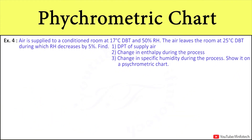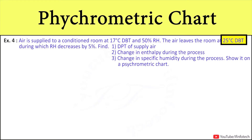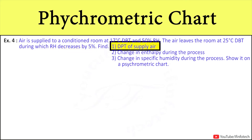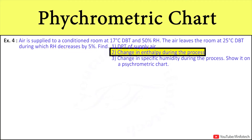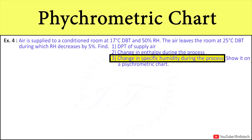Air is supplied to a conditioned room at 17°C dry-bulb temperature and 50% relative humidity. The air leaves the room at 25°C dry-bulb temperature, during which relative humidity decreases by 5%. Find the dew point temperature of supply air, change in enthalpy during the process, change in specific humidity during the process, and show it on the psychrometric chart.